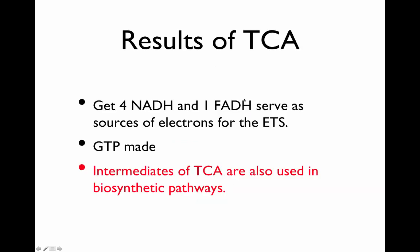The results of the TCA cycle: you get 4 NADH and 1 FADH2, and these serve as sources of electrons for the electron transport chain. These are very high-energy electrons — NADH is very high on the electron potential tower, meaning it has a lot of energy. You also get 1 GTP from substrate-level phosphorylation, and the intermediates of the TCA cycle are used in biosynthetic pathways as starting points for making all sorts of things in the cell.